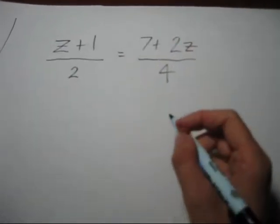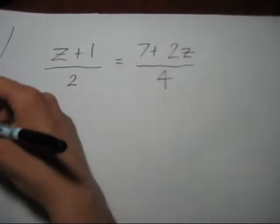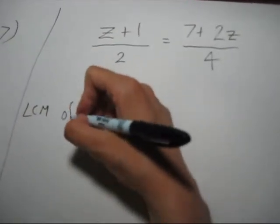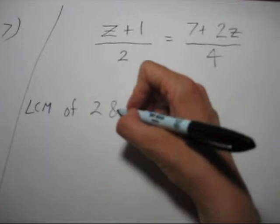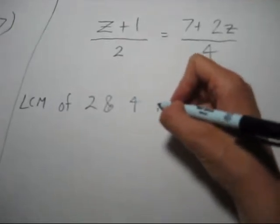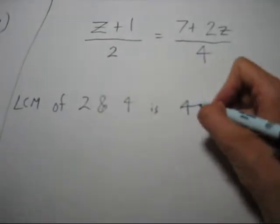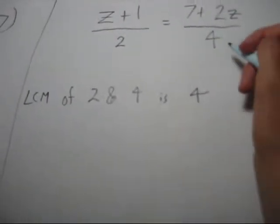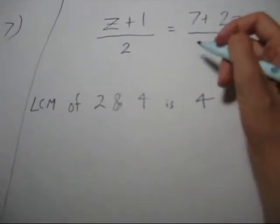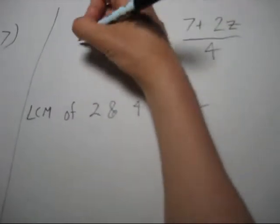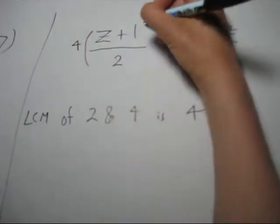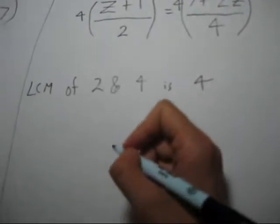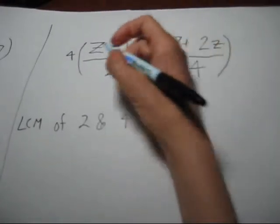Well, we've got fractions, let's wipe them out. Our LCM of 2 and 4 is 4, because 2 actually goes into 4. If you don't like that, you can think of it as cross-multiplying. So let's multiply both sides by 4.